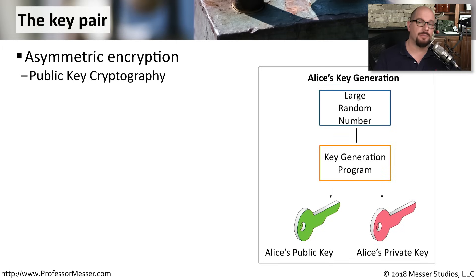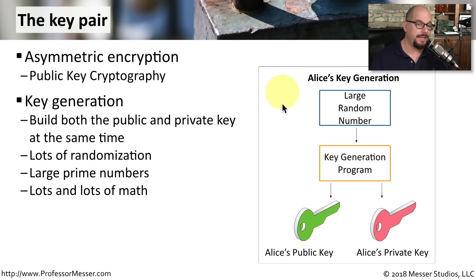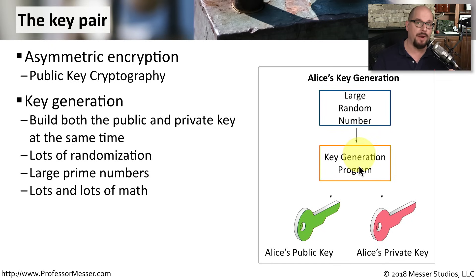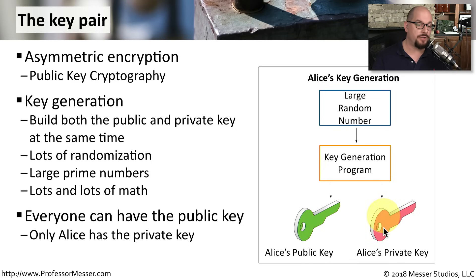Someone's public and private keys are mathematically related — we create these keys at the same time using a key generation process. We start with a large random number, put that into a key generation program, and out of that we get two keys: a public key and a private key. We give everyone a copy of the public key, and we make sure that we are the only ones who have access to the private key.